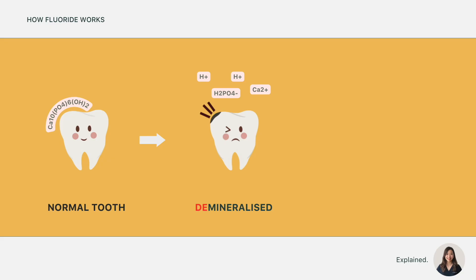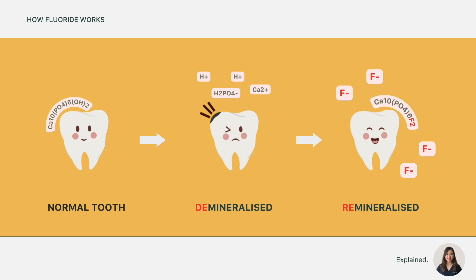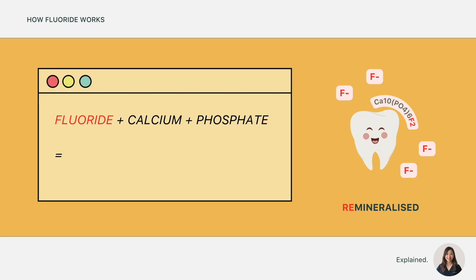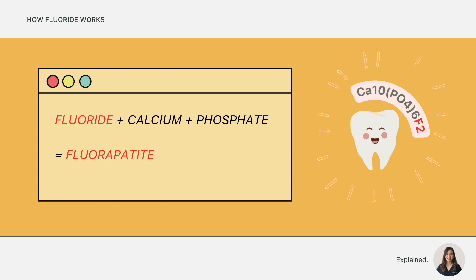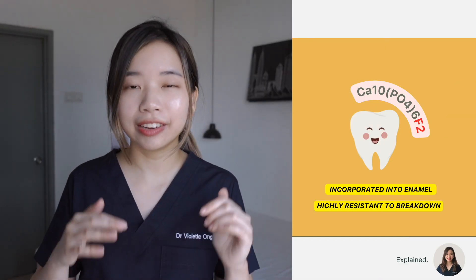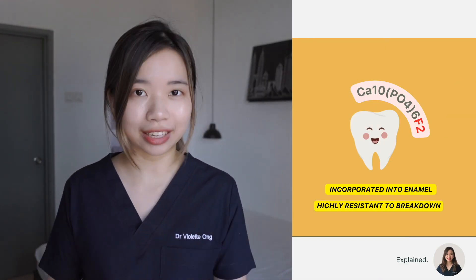Fluoride works by stopping or even reversing the tooth decay process. Whenever tooth decay happens, fluoride helps to remineralise the tooth surface by combining with calcium and phosphate to form a mineral called fluoroapatite. This mineral gets incorporated into enamel and is highly resistant to breakdown.